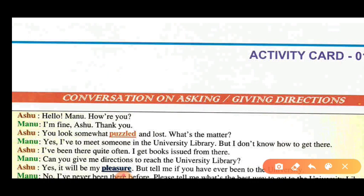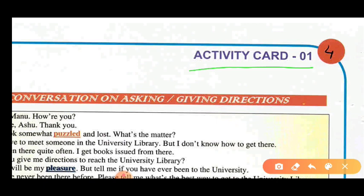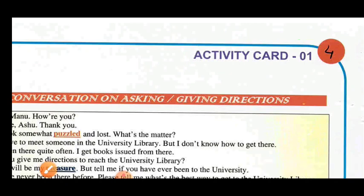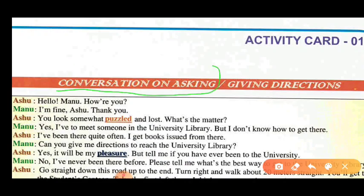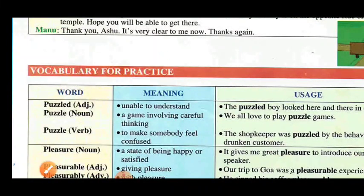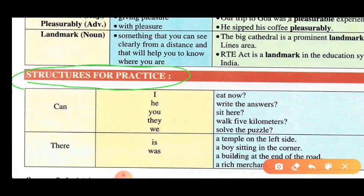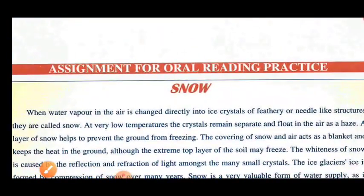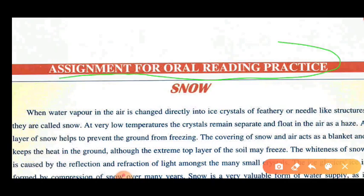Today we are going to learn some important concepts which will help you in improving your English speaking skills. In this we are going to discuss some activity cards, and this one is your first activity card. In this activity card we are going to learn some important things such as conversation skill, vocabulary, and the structure for practice, in which we will learn how to make different kinds of sentences by using different parts.